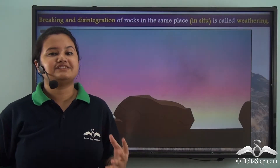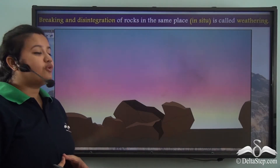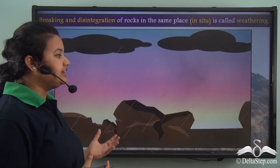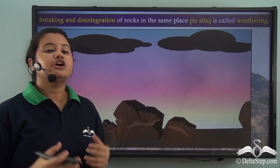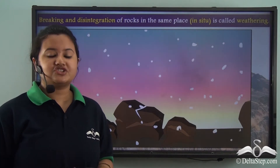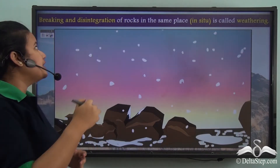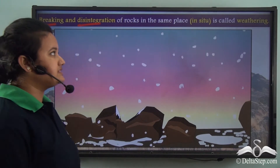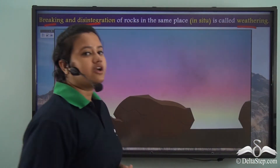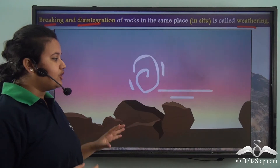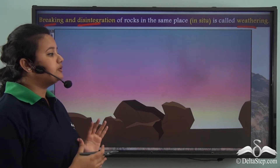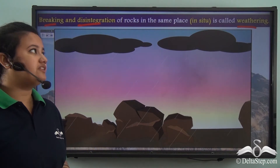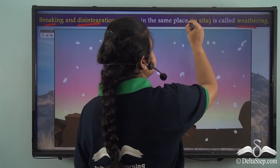Let us now define weathering. We can see that rocks are broken down due to the action of wind, rain, and frost. This process in which the rocks found on the earth's surface break down or disintegrate into smaller pieces is known as weathering. The rocks break down into smaller pieces in the places where they are found, and due to this reason, weathering is also known as an in situ process.